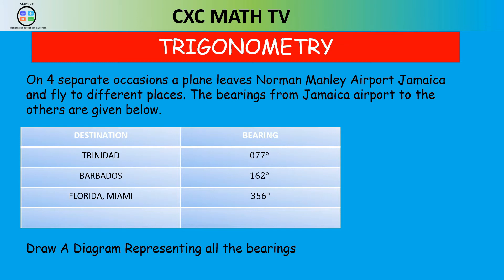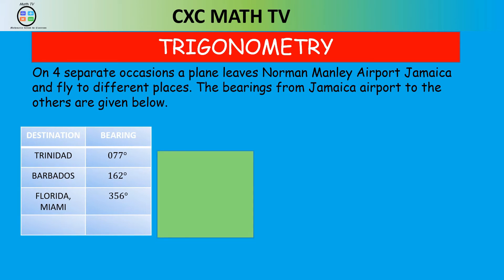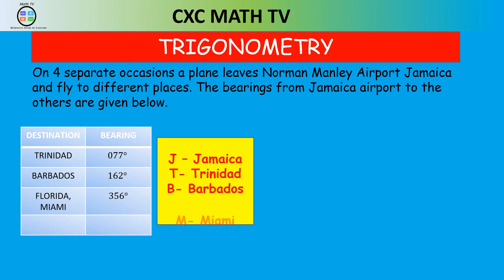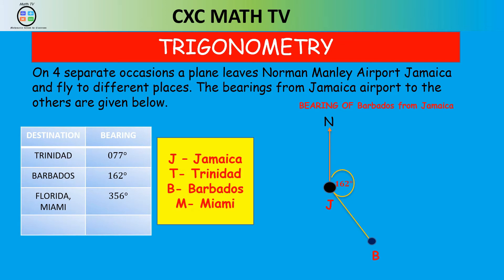Draw a diagram representing all the bearings. Let's call Jamaica J, Trinidad T, Barbados B, and Miami M. For the bearing of Trinidad from Jamaica, you start with your point for Jamaica, draw the north line going directly above Jamaica, and then measure 77 degrees clockwise from the north line. That represents the bearing of Trinidad from Jamaica. For Barbados at 162 degrees, that's going more into a southeast direction.